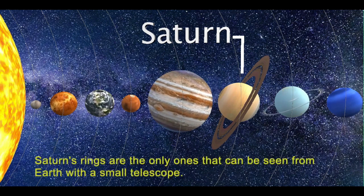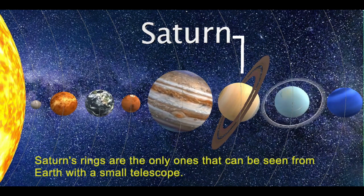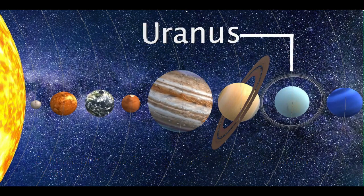Saturn's rings are the only ones that can be seen from Earth with a small telescope. Seventh is Uranus.